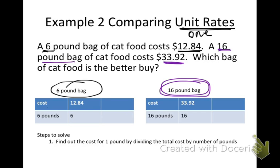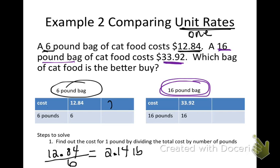To solve, find the cost for one pound by dividing the total cost by the number of pounds. For the six-pound bag, the total cost is twelve dollars and eighty-four cents divided by six pounds. Doing the long division, that equals two dollars and fourteen cents per pound. I'll fill in the chart: two dollars and fourteen cents for one pound.